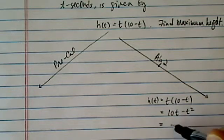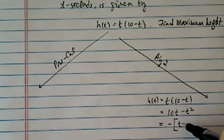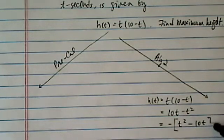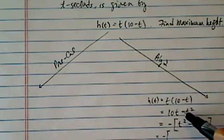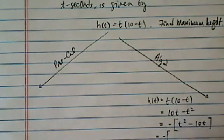In order to find a maximum height, I do have to complete the square. As nasty, as unpleasant as it sounds, it's something we have to do. So I pulled a minus sign because the coefficient of the t squared is minus. I'm pulling it out, so t squared minus 10t.